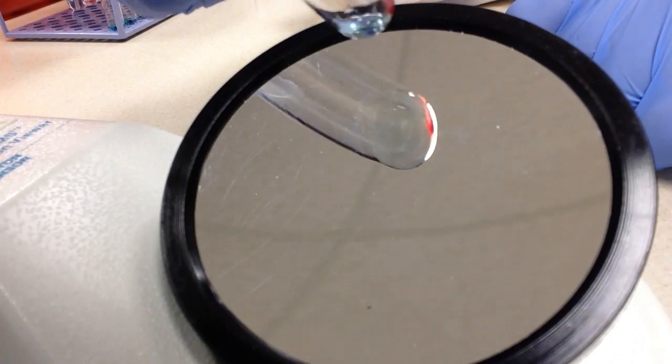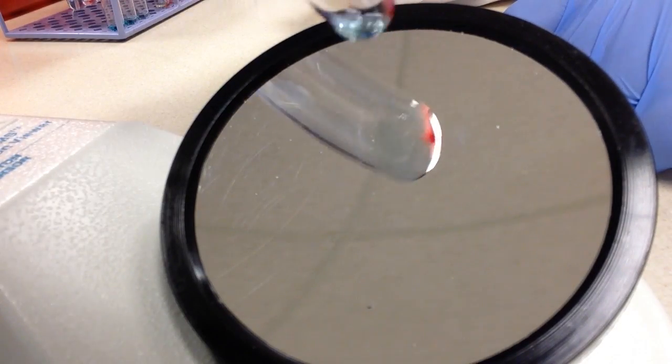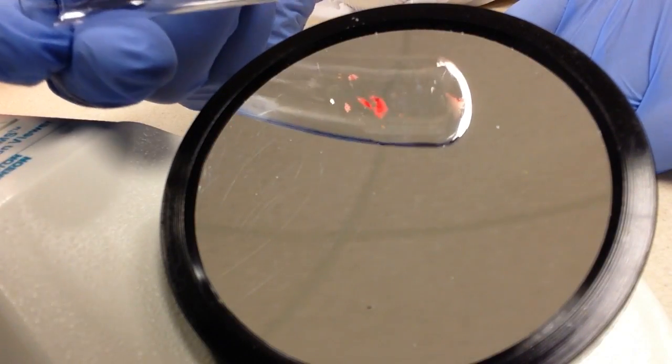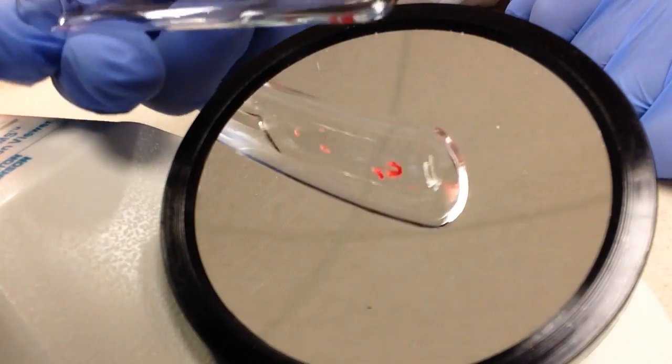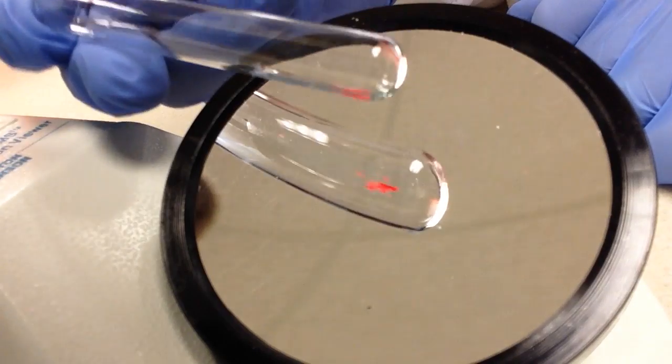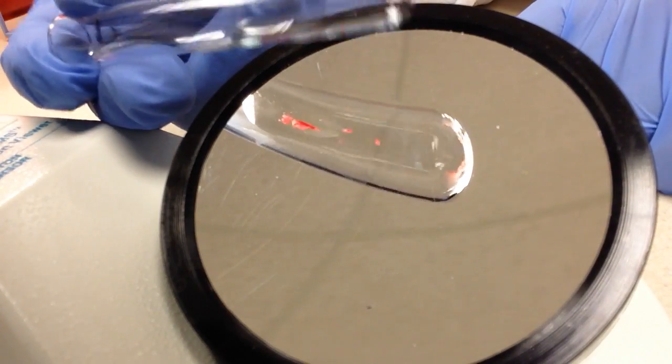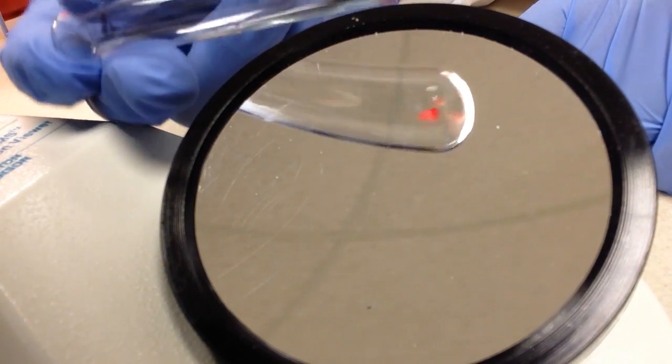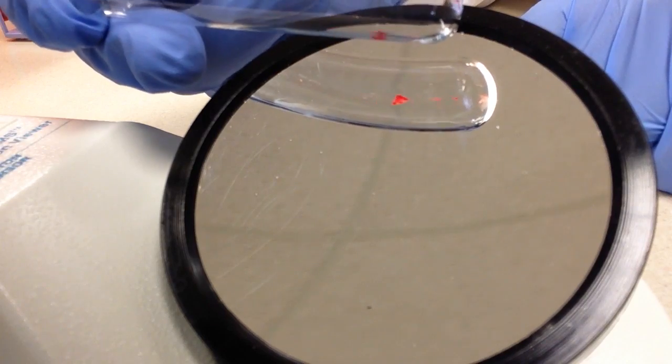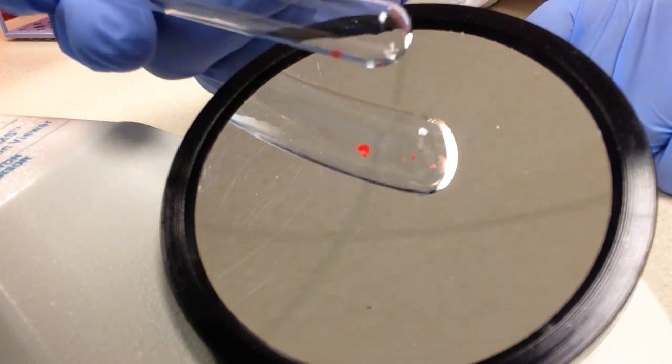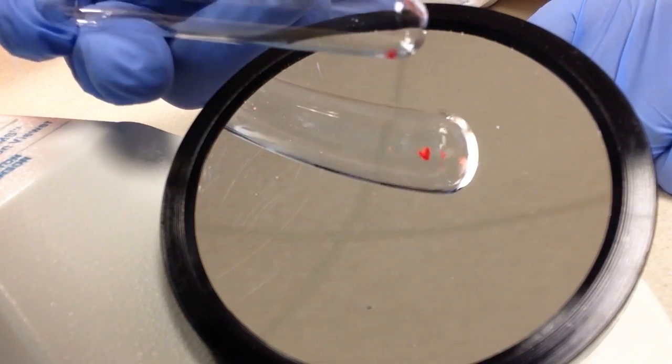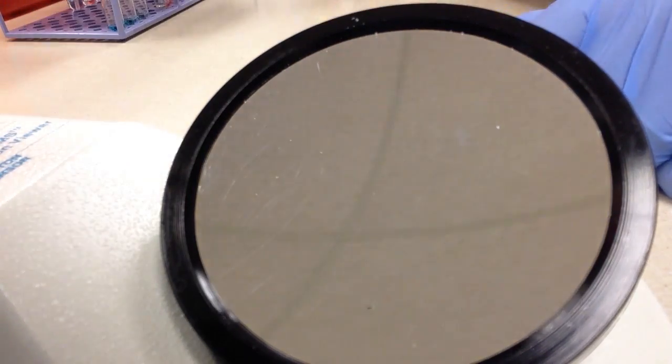1 to 16. Now in this tube, we definitely have agglutination, but you can see that there's not just one solid button, there are smaller buttons. There's one big one and some smaller ones, and a completely clear background. So we're going to call that 3 plus.